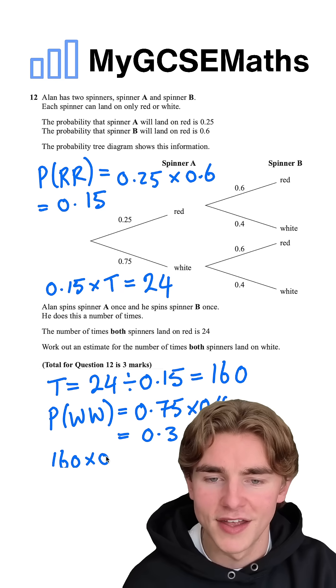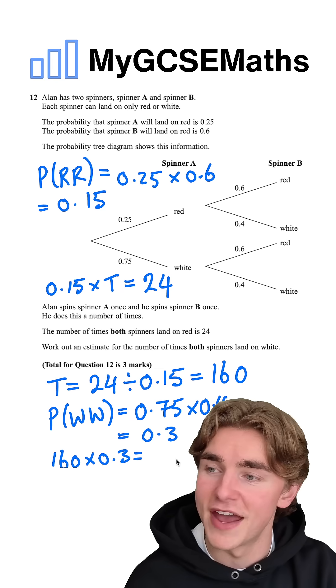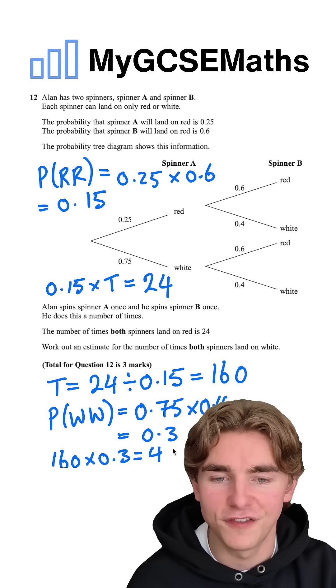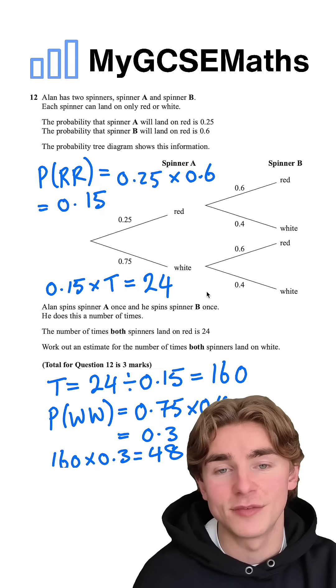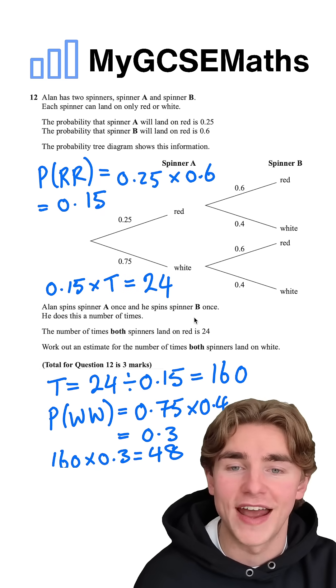So we're going to do 160, the total number of spins, times 0.3, the probability of getting white, white. That gives us 48. Our answer to this question: an estimate for the number of times of getting white and then white.